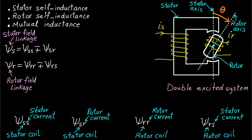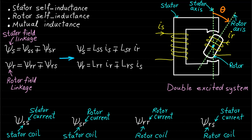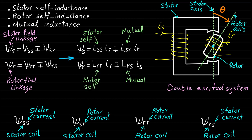These two equations can be represented by the inductances of the magnetic circuit as shown. LSS represents the stator self-inductance. LSR and LRS represent the mutual inductance between the stator and rotor. LRR represents the rotor self-inductance.